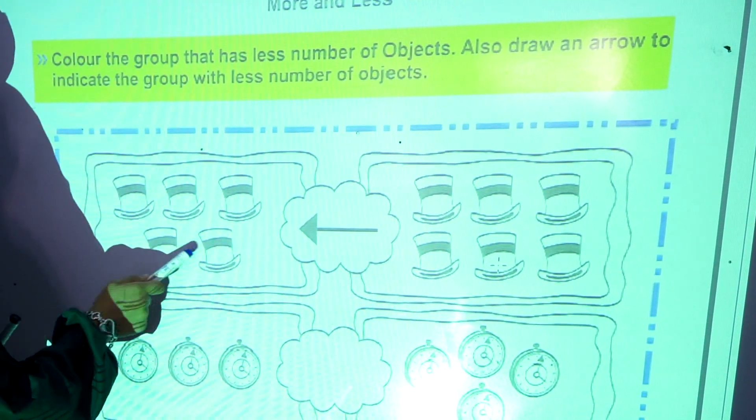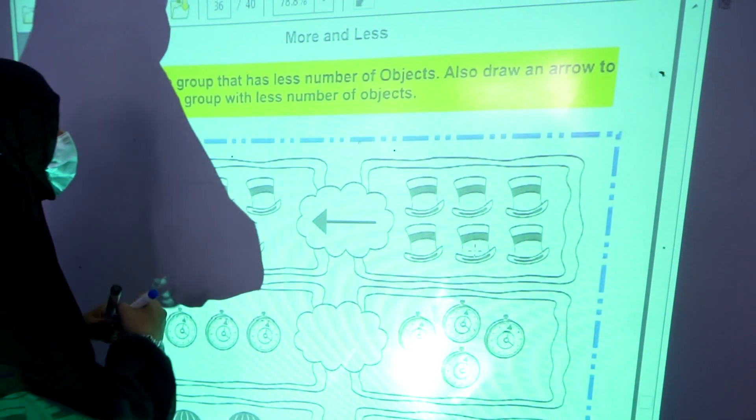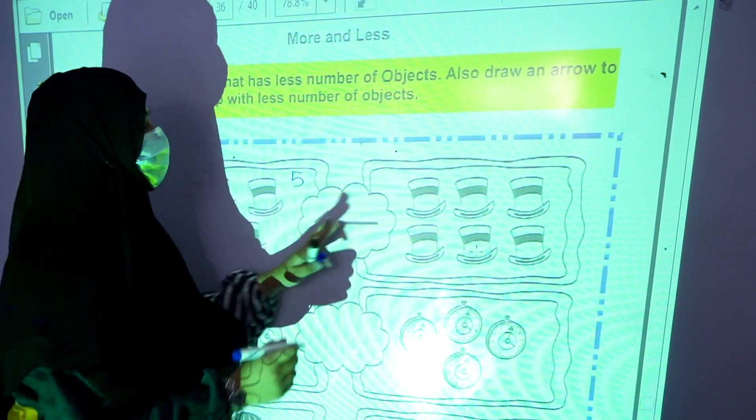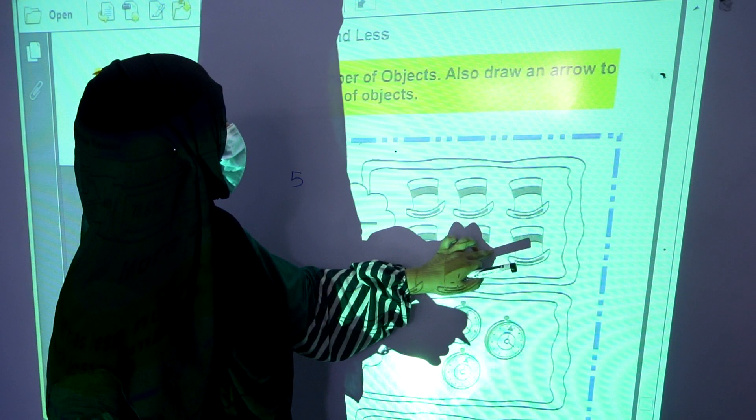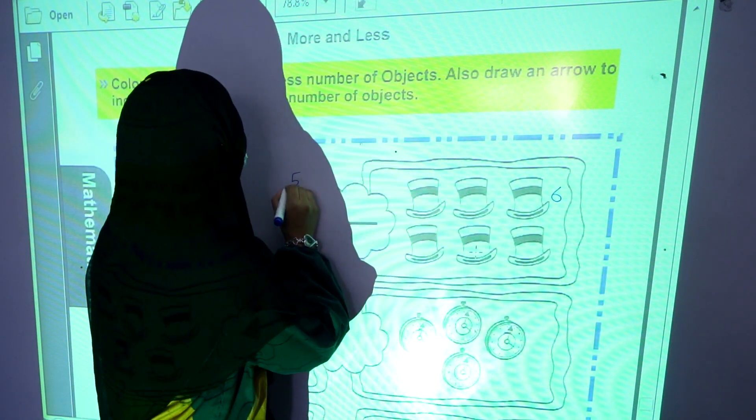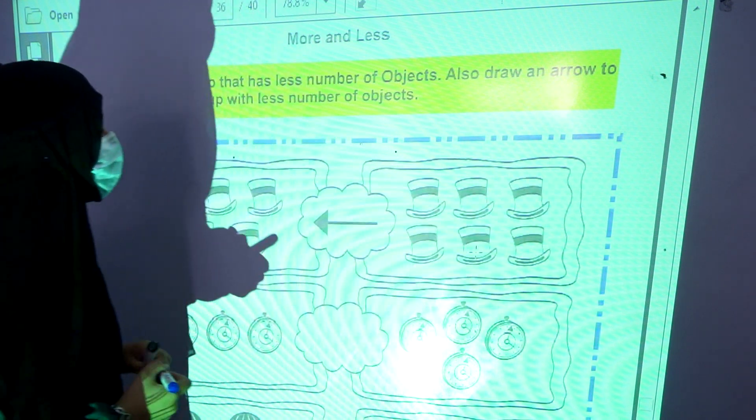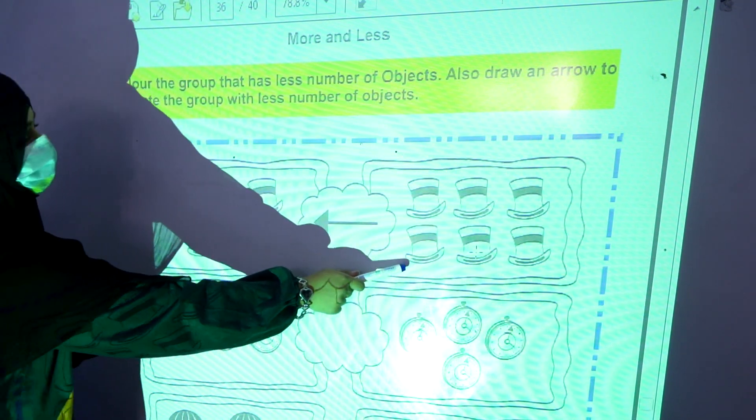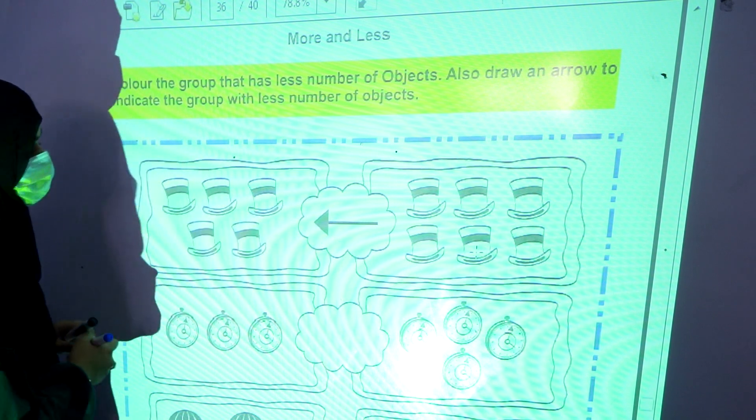1, 2, 3, 4, 5. These are 5. 1, 2, 3, 4, 5, 6. These are 6. Now what will you do? You have to count them. You have to indicate an arrow to the lesser one.